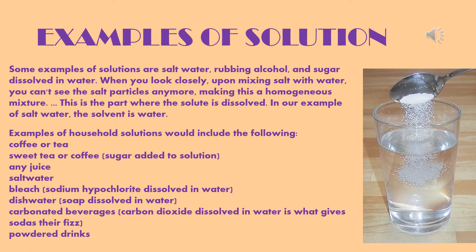Examples of solutions include salt water, rubbing alcohol, and sugar dissolved in water. When you mix salt with water, you can no longer see the salt particles, making this a homogeneous mixture — this is where the solute is dissolved. In our example of salt water, the solvent is water. When you mix salt in water, it becomes a homogeneous mixture or solution, which is why it is called a solution.